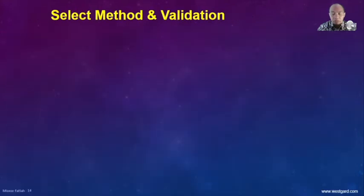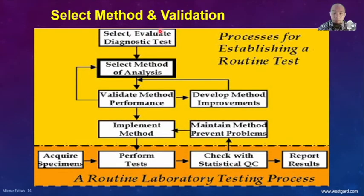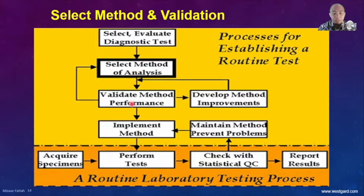The first important step is how to select a method and perform validation. Routine test processing involves: having a requirement, collecting specimens, performing the test, checking quality, and reporting. But before running routinely, we need to first select and evaluate the test, perform method analysis, validate, and implement. After running routinely, if problems arise, we implement corrective measures. We will discuss two parts today: how to evaluate and how to maintain quality.